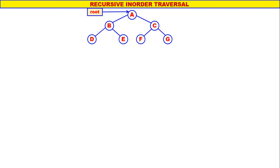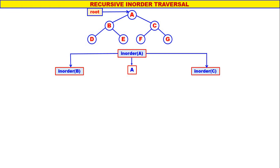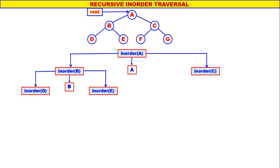Now let us consider a bigger tree. A is the root of the tree, we call inorder of A. Left child of A is B, therefore inorder of B. Next A is displayed. Right child of A is C, therefore inorder of C. For inorder of B: left child of B is D, therefore inorder of D. Next B is displayed. Right child of B is E, therefore inorder of E.